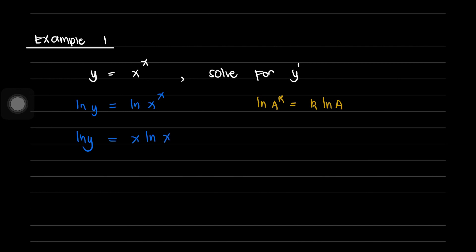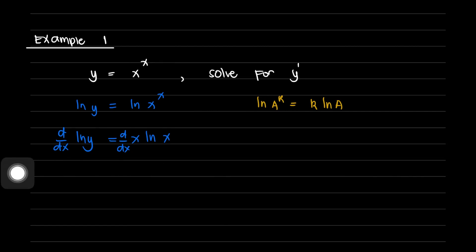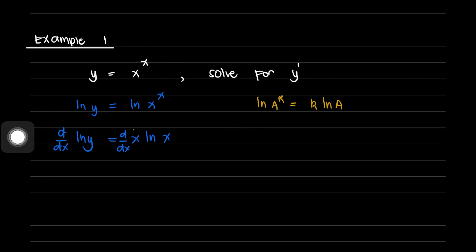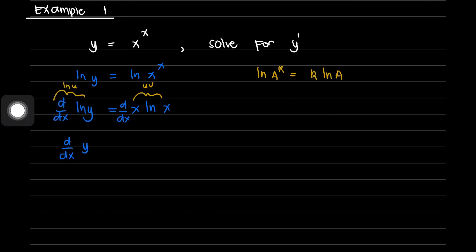Taking the derivative of both sides with respect to x: the derivative of ln of y is on the left side, and on the right side we have the derivative of x multiplied by ln of x. The right side is in the form u times v, and the left side is in the form ln of u. For the derivative of ln of u, that would be the derivative of u with respect to x all over u. Our u here is y, so that gives dy/dx all over y.